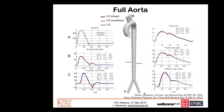For a model of the full aorta, flow rates are shown on the left and pressure signals on the right. The blue lines show results from the 3D model, the black lines from a linearized 1D model, and the red lines from a nonlinear 1D model. The 1D models are able to capture the main features of the 3D pressure and flow results, and we obtain average relative root-mean-square errors smaller than 3% in both pressure and flow data.